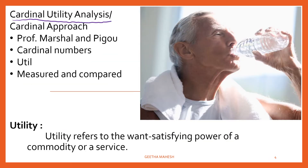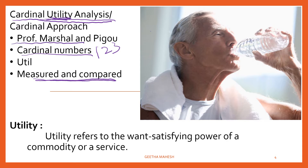What do you mean by cardinal utility analysis? When utility is measured and compared in terms of cardinal numbers like 1, 2, 3 and so on, then it is called cardinal utility analysis. It was given by Alfred Marshall and A.C. Pigou. The utility is expressed in terms of utils.